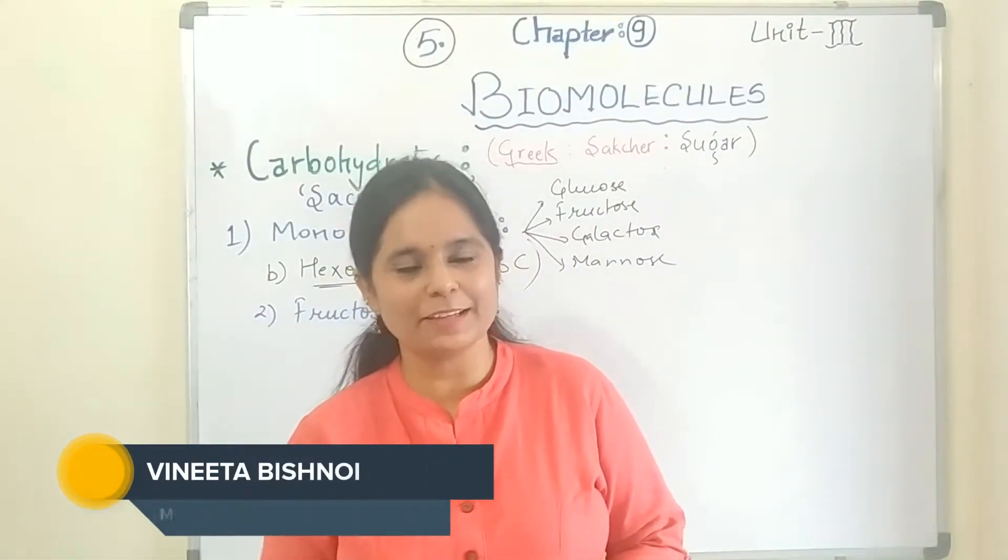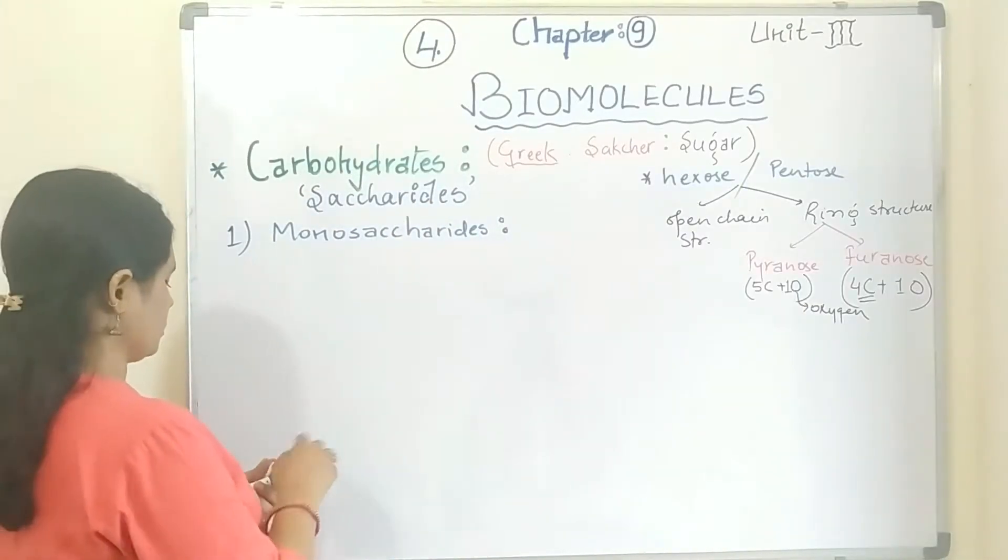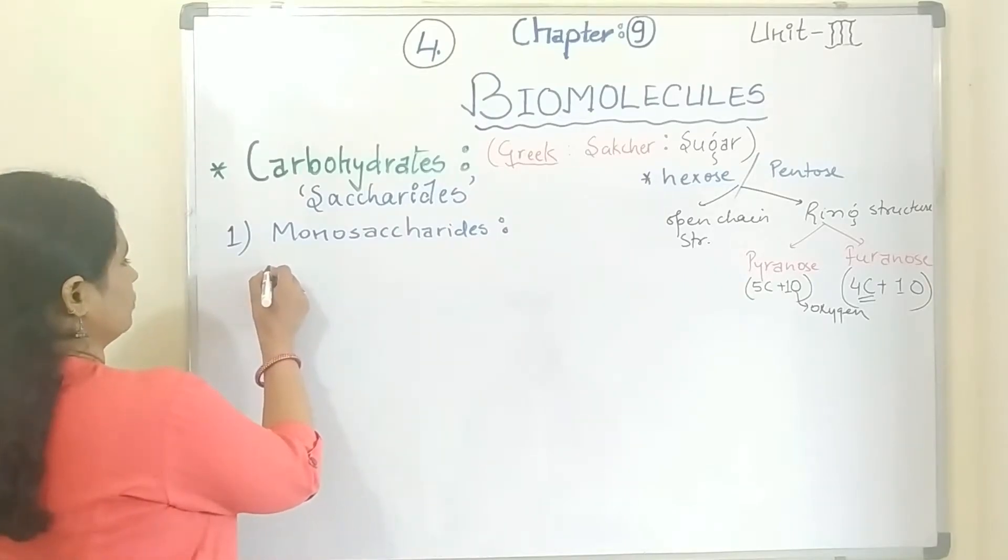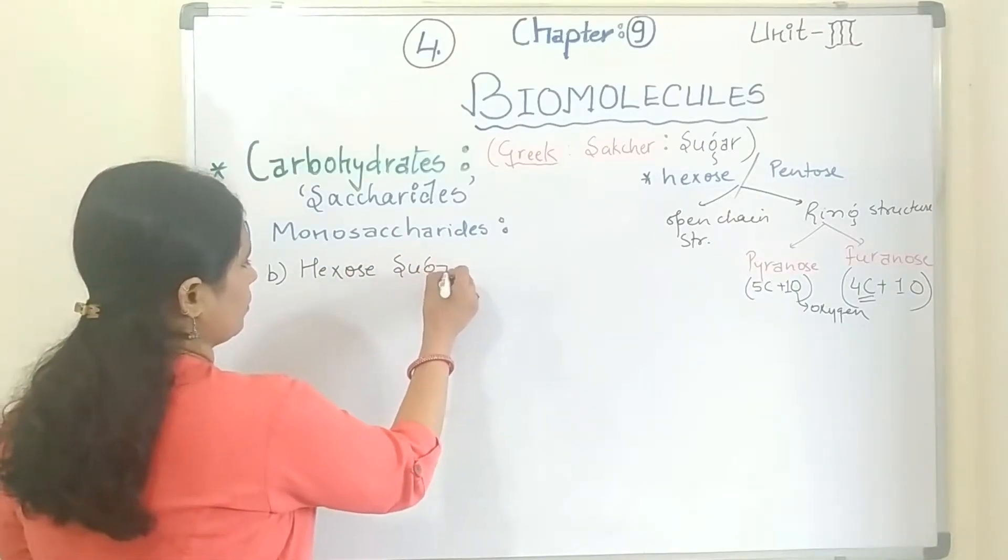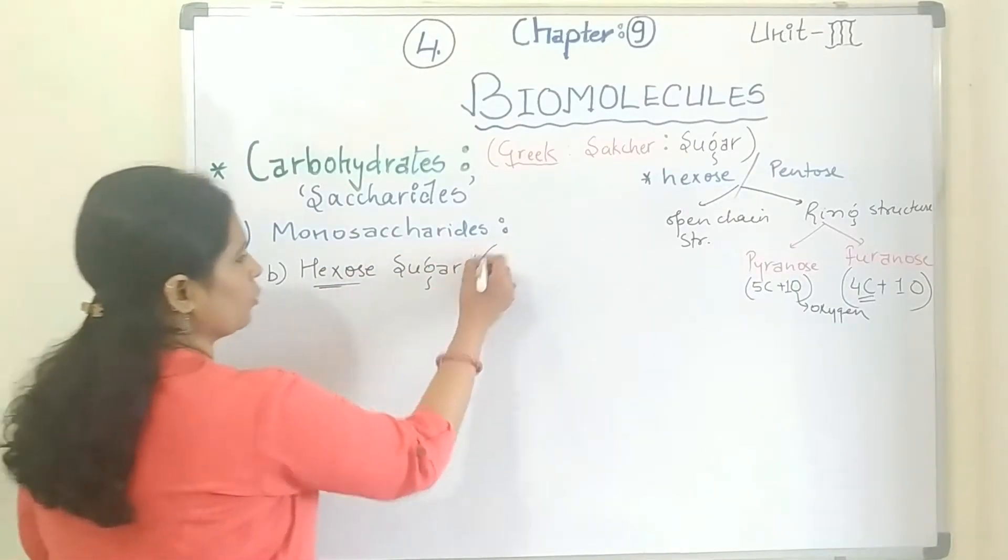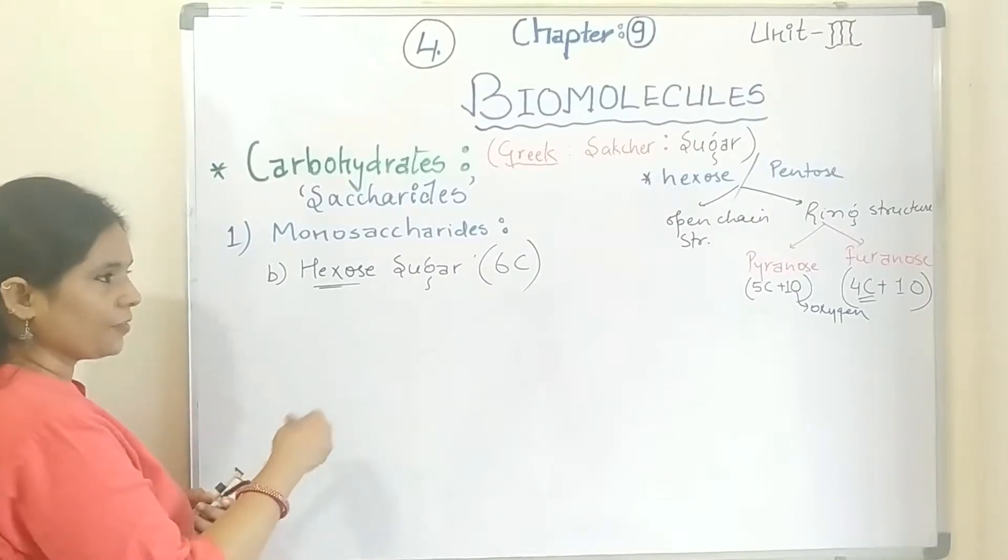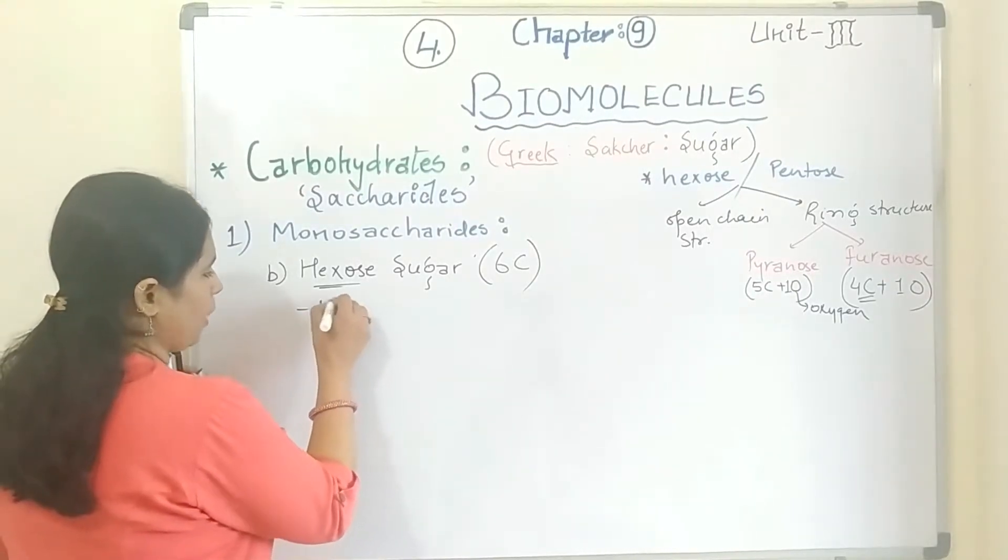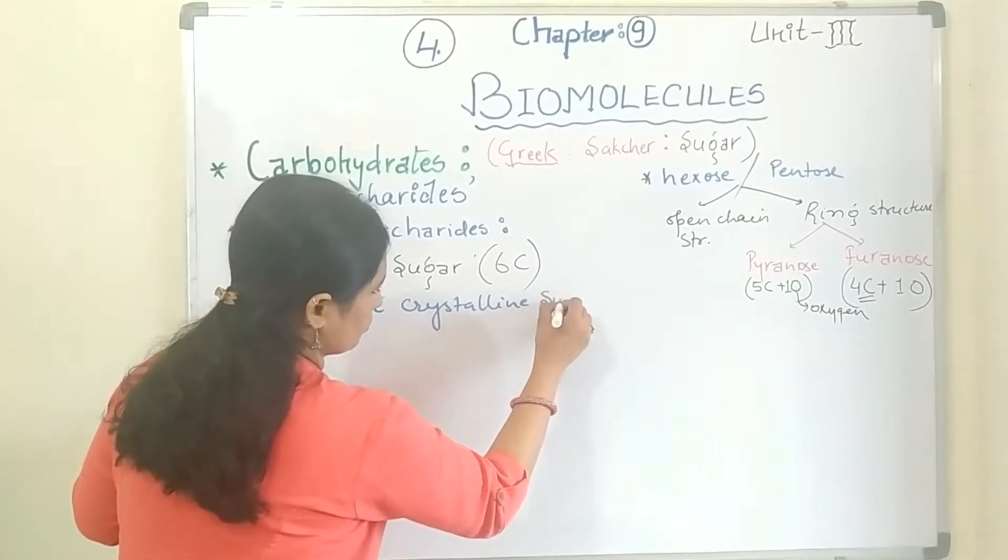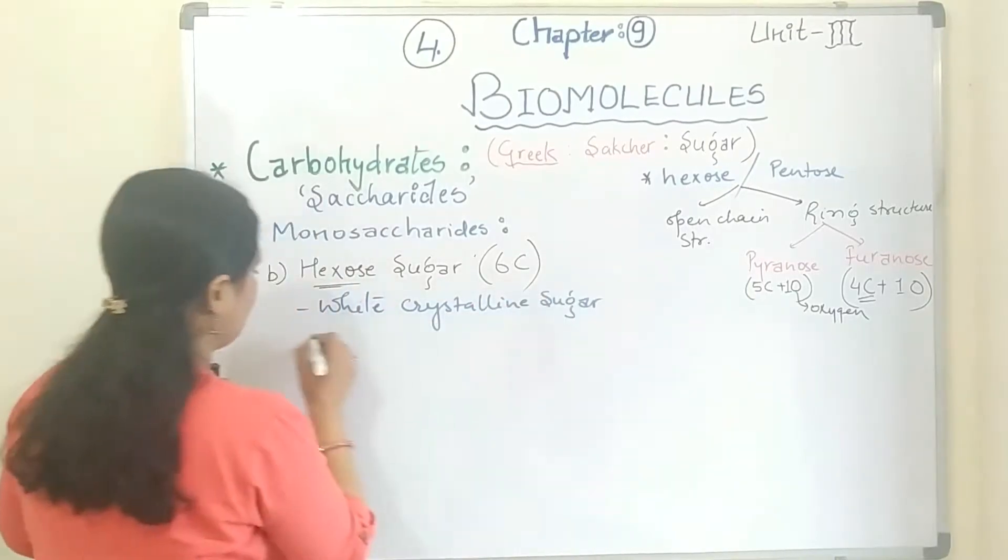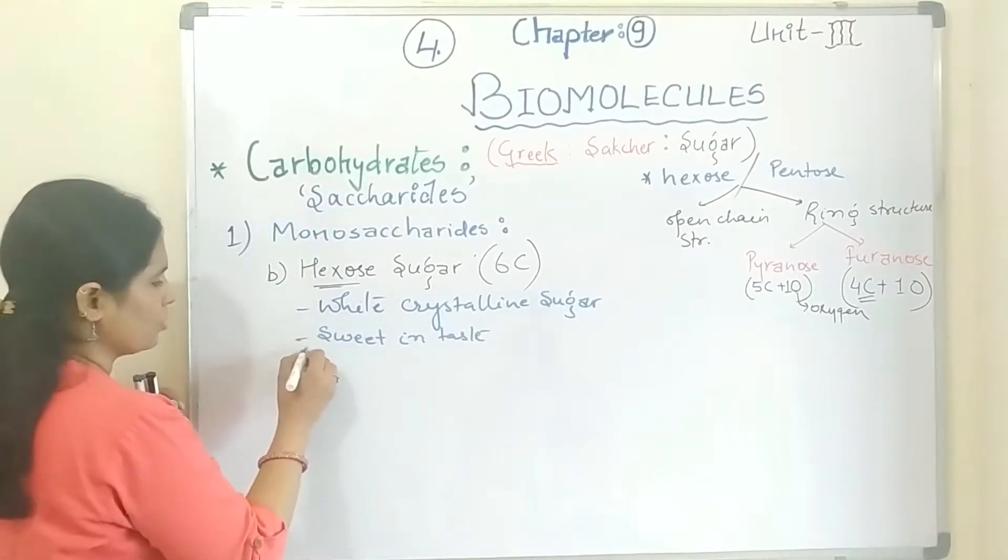Hello everyone, welcome to my channel. Let's start with today's video. The next topic we are going to discuss is hexose sugar. You will see six carbon atoms in it. If we talk about its general characteristics, hexose sugar is white crystalline sugar, sweet in taste, and soluble in water.